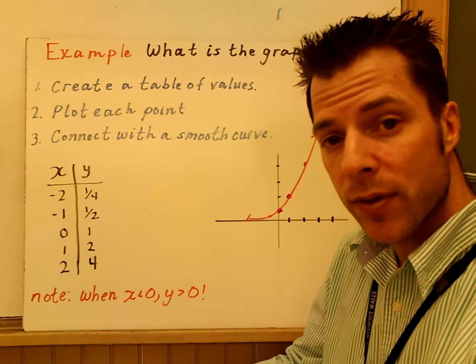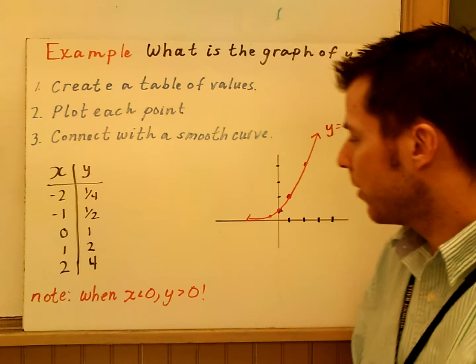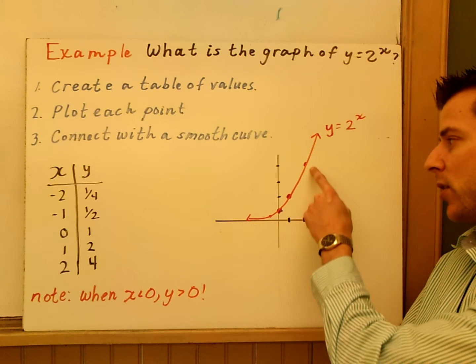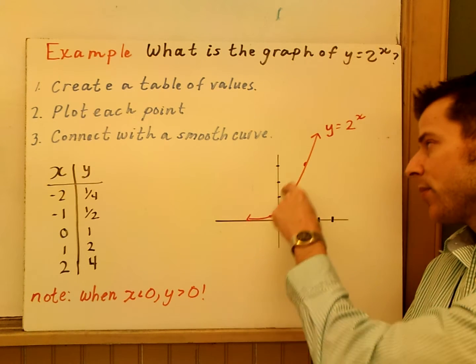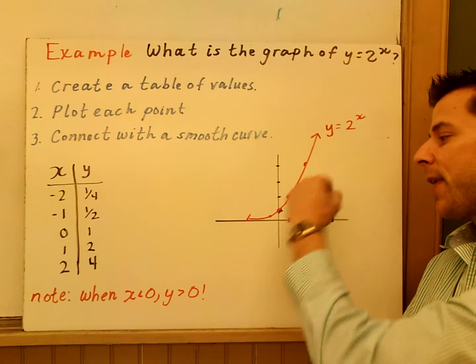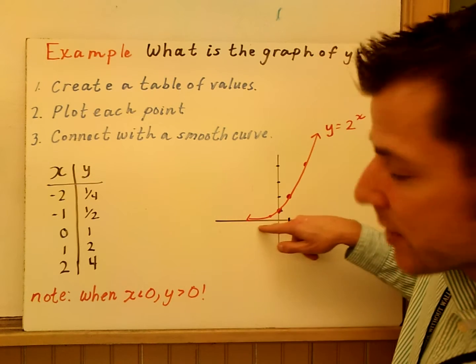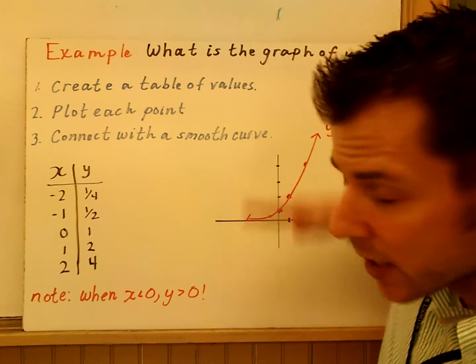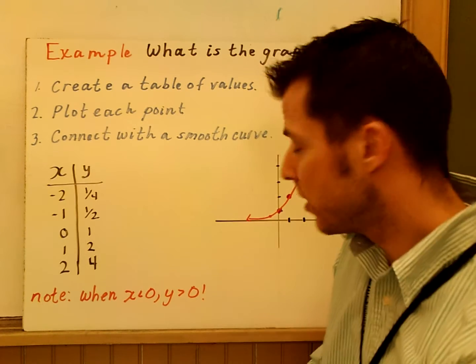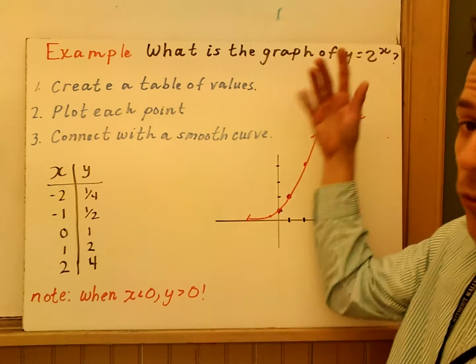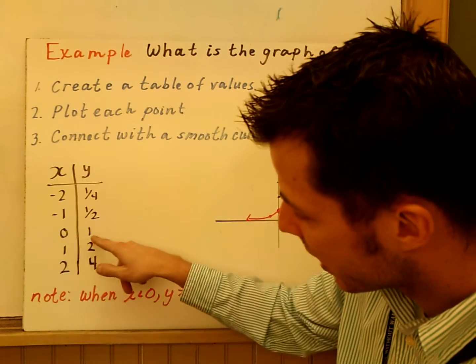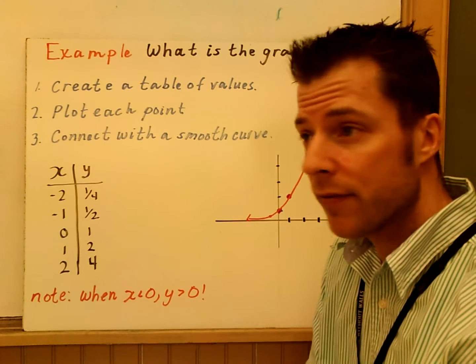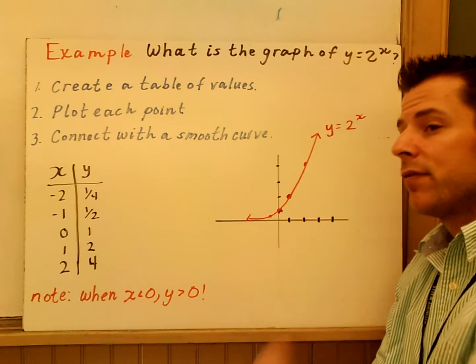The second step is after we make the table, we plot the points. So, here's 0, 1, 1, 2, and 2, 4. And then I connect them in step 3 with a smooth curve. Here's my graph. You can see the horizontal asymptote is at y equals 0. My graph is above the y-axis, so the range is going to be y is greater than 0. The a value here was 1, so the y-intercept here is 1. So, that's what that graph looks like here.